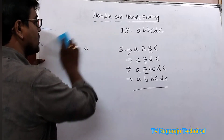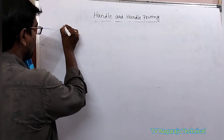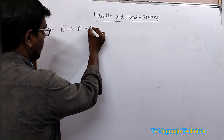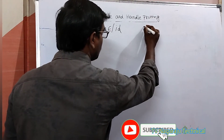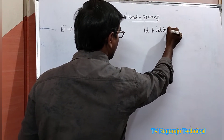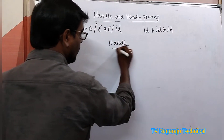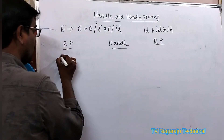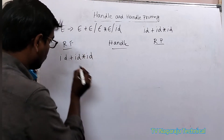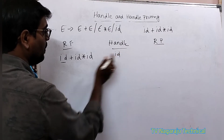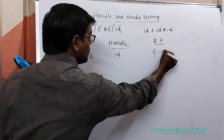Consider one more example to understand the concept of handle. The procedure is the same. Suppose you have a production of the form E tends to E plus E, E into E, and one more terminal ID. The input string is ID plus ID into ID. The right sentinel form, handle, and replacing production: the first right sentinel form is ID plus ID into ID. The first handle is ID, and the replacing production is E tends to ID.